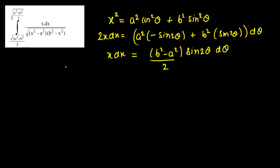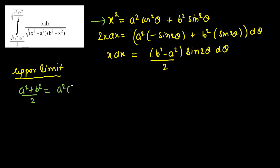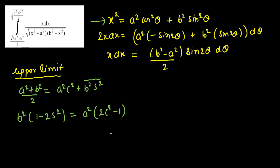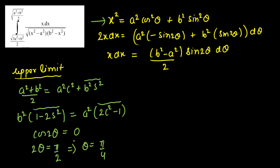Now let's find the limits. For the upper limit, x = √((a² + b²)/2), so x² = (a² + b²)/2 = a²cos²θ + b²sin²θ. Rearranging, b²(1 − 2sin²θ) = a²(2cos²θ − 1), which gives cos2θ · (b² − a²) = 0, so cos2θ = 0, meaning 2θ = π/2, thus θ = π/4.